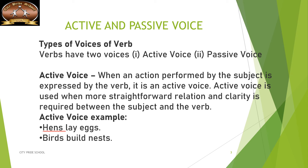For example, there is a subject — a noun who is doing some action. Hens lay eggs: hens have done the work of laying the eggs. Birds build nests: bird is the subject, verb is 'build', and what they have built is a nest. So this has a direct, straightforward relation and clarity between the subject and the verb.